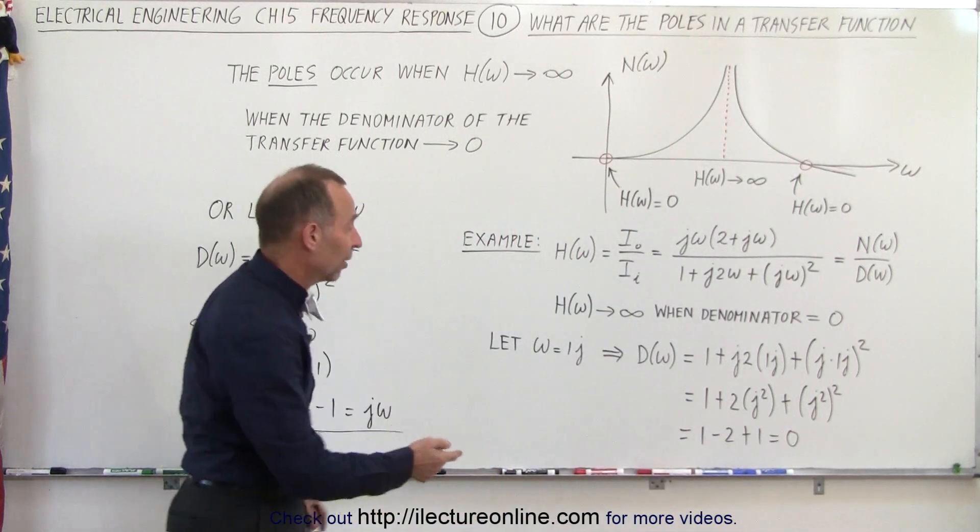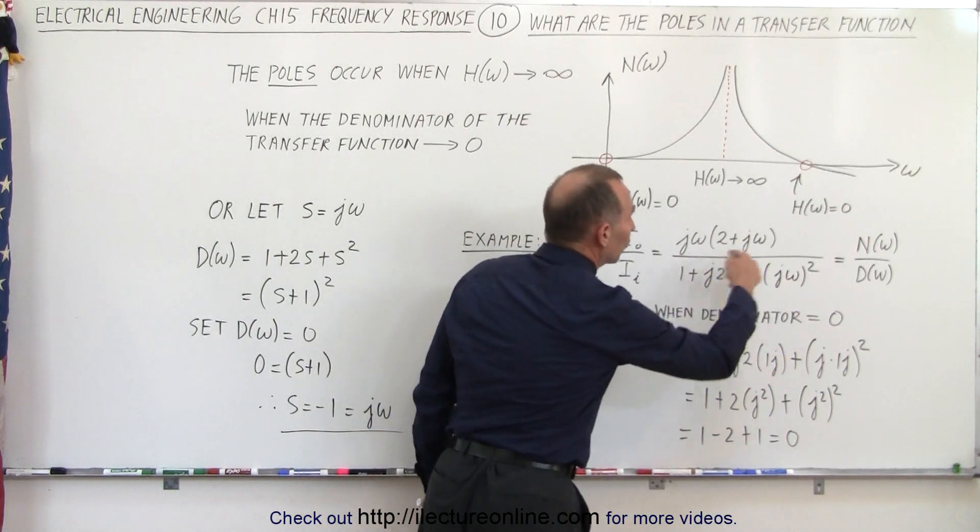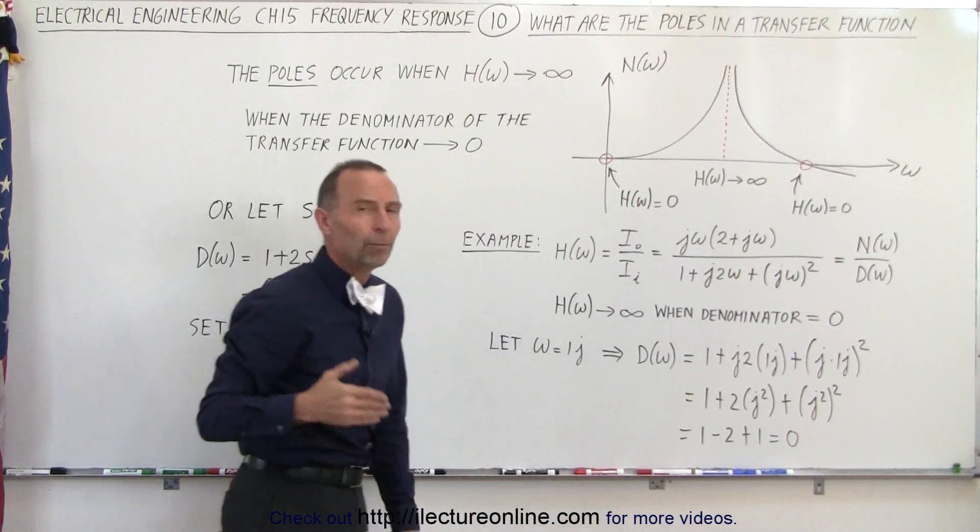So in the case that omega equals 1j, this denominator will go to zero, and that's when we have a pole.